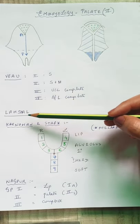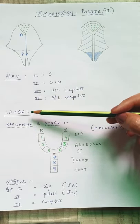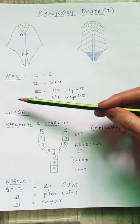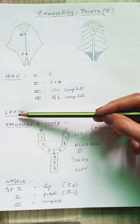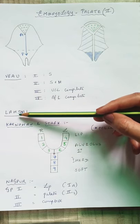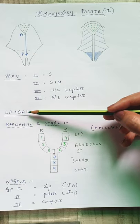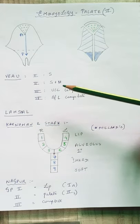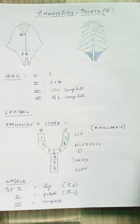Another classification is the Lassal classification, which moves from the lip to the alveolus, hard palate, soft palate, back to the hard palate, alveolus, and lip. Right and left designations are added depending on which side is involved.